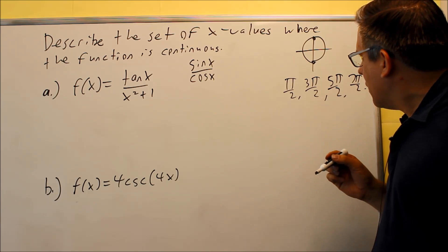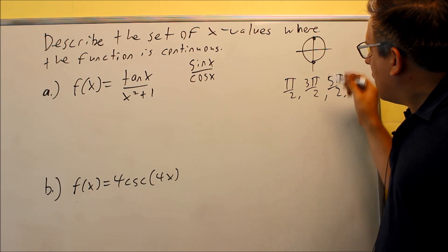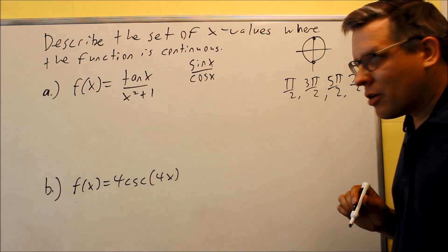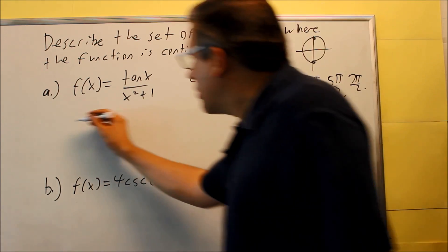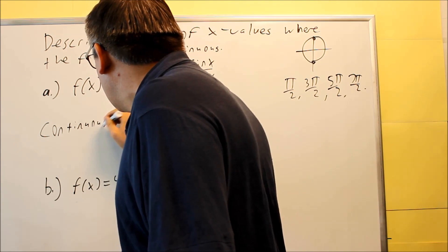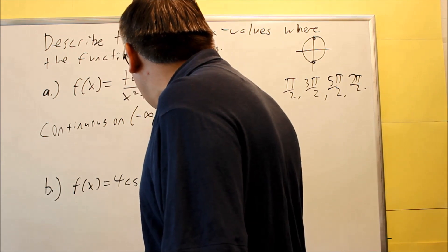So basically what's happening is if I have an odd number with a pi on top divided by two, that's a place where I'll be getting an x value of zero. So therefore, if I divide by zero, I get a discontinuity there. So here's how you'd write your answer.